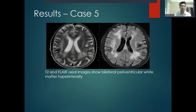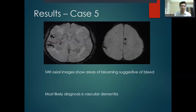Case 5: T2 and FLAIR axial images show bilateral periventricular white matter hyperintensity. Susceptibility-weighted imaging axial images show areas of blooming, suggestive of microbleeds. The most likely diagnosis is vascular dementia.